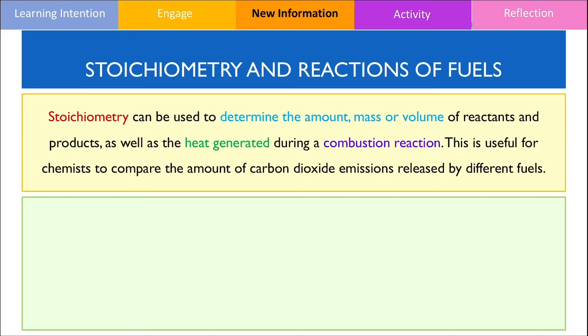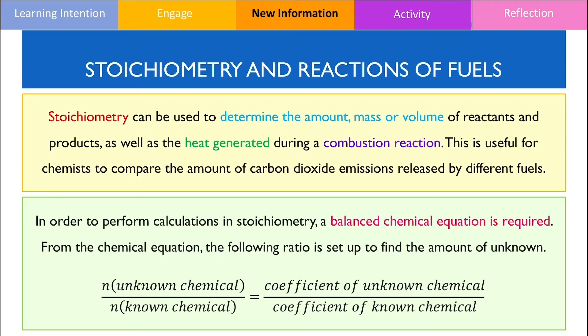In order to perform calculations in stoichiometry, a balanced chemical equation is required. When we have this ready, we can set up a ratio so that we can find the number of moles of an unknown substance, whether that is for the reactant or product.